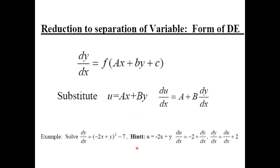There is also the form reducible to variable separable by substitution — a special form different from the homogeneous system. Equations of the form dy/dx = f(ax + by + c) require substituting u = ax + by, then expressing du/dx = a + b·(dy/dx). After substitution, variables become separated and the equation can be integrated.